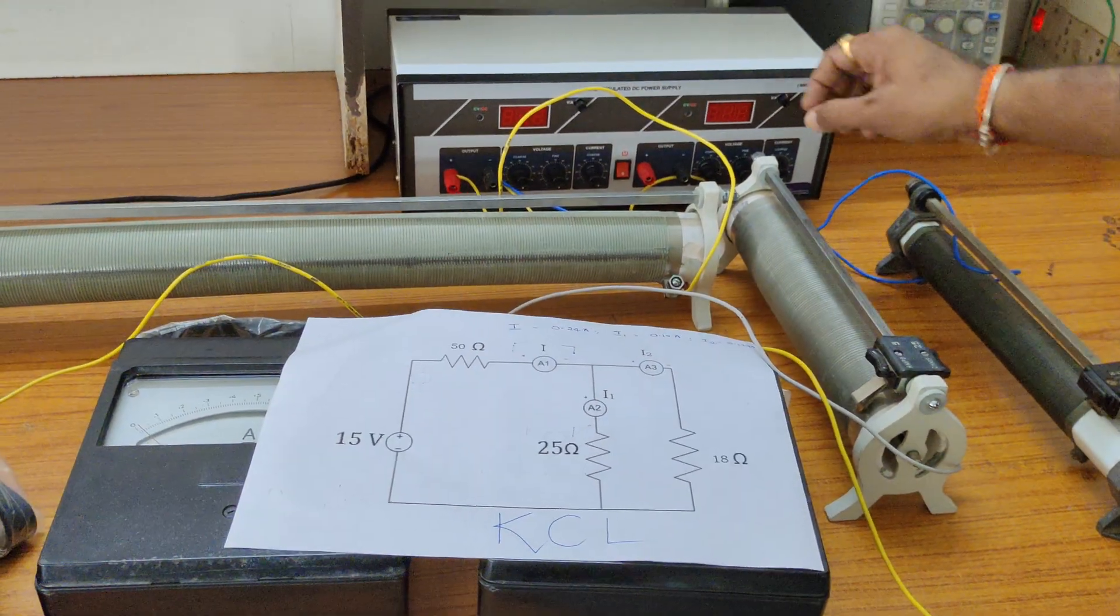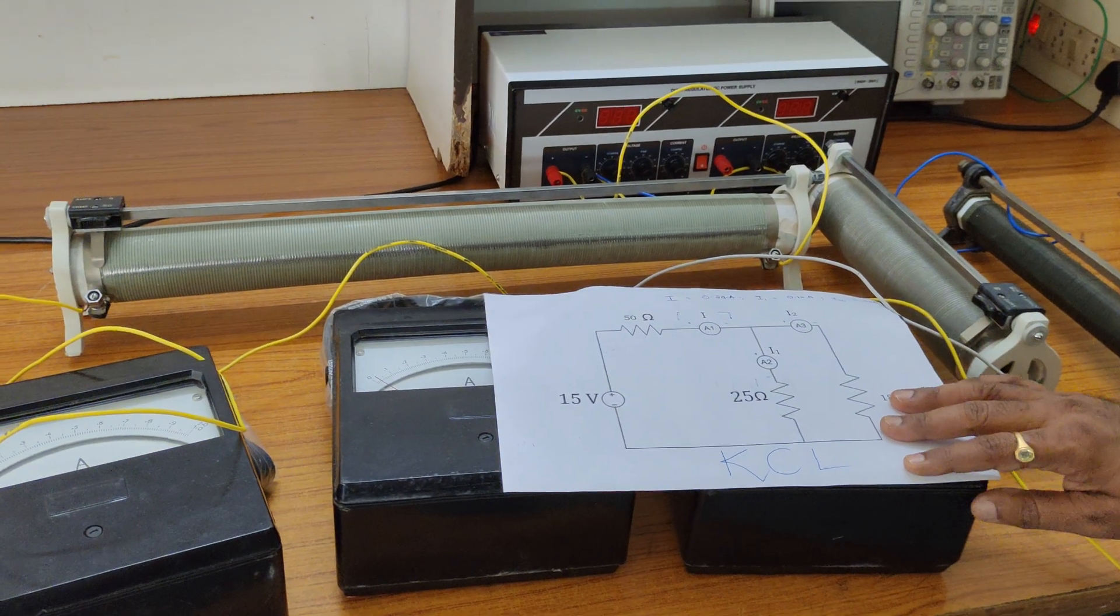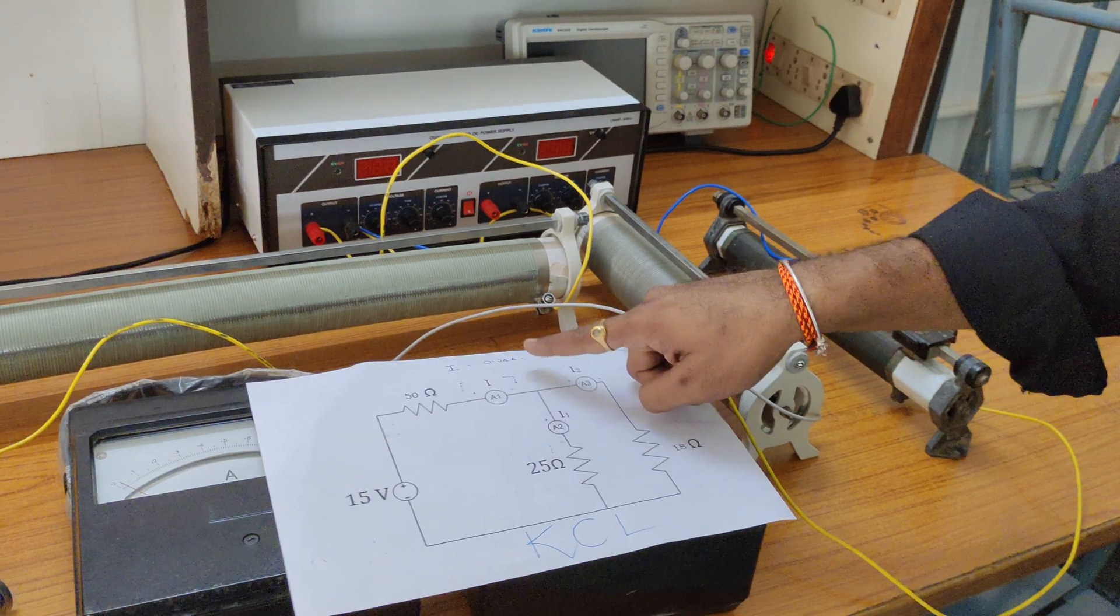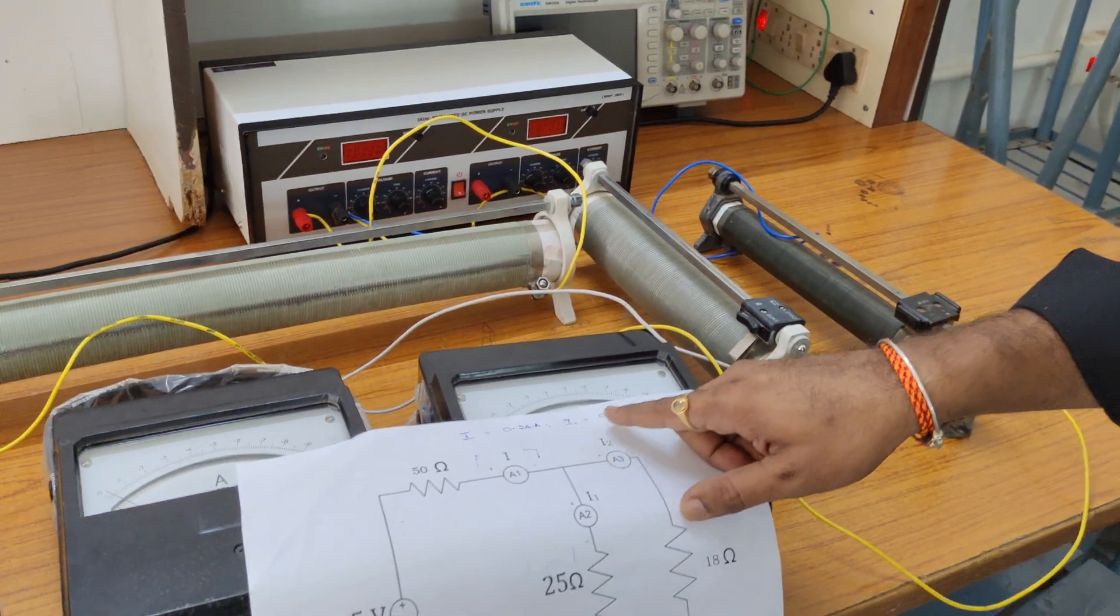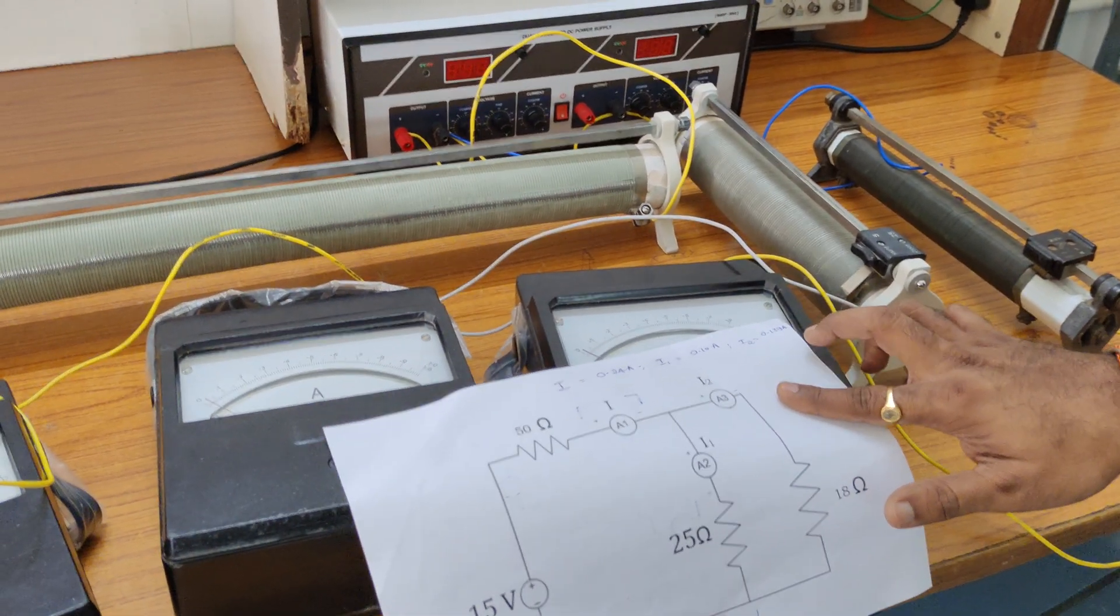With the help of this RPS, I will turn on the supply. Then I'll verify everything. Theoretically, we observe these calculations - the total current is 0.24, I1 equals 0.10, and I2 equals 0.139.